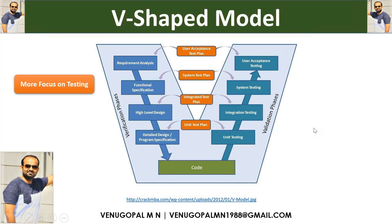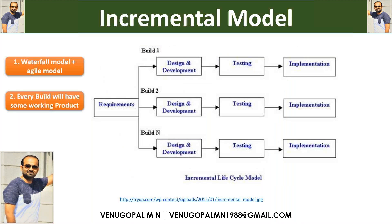The V-shape model is almost similar to the waterfall model. It includes requirement analysis, functional specification, high-level design, detailed design, and coding. However, the V-shape SDLC model focuses more on testing. In the verification and validation phases, each and every phase — requirement analysis, functional specification, high-level design (HLD), and detailed design — has a corresponding testing phase involved. So the V-shape model has more focus on testing.